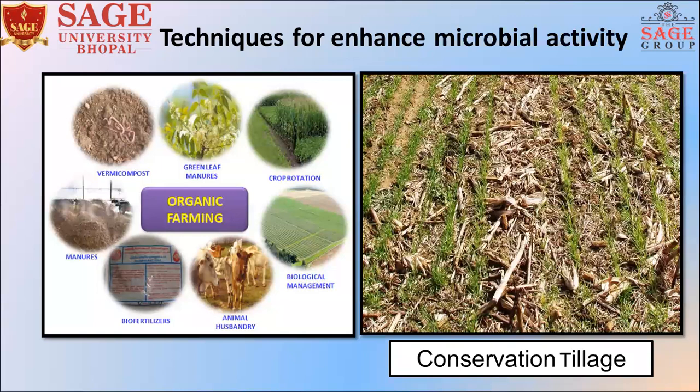There are different techniques for enhancing microbial activity in organic farming. These include different components like green leaf manures, crop rotations, biological management, animal husbandry, biofertilizers, and manures. Now, conservation tillage — any tillage system which maintains at least 30% crop residues on the soil surface is called conservation tillage. There are two types: zero tillage and minimum tillage.